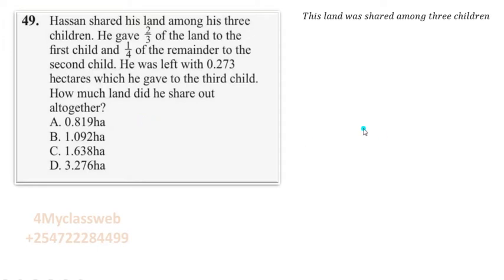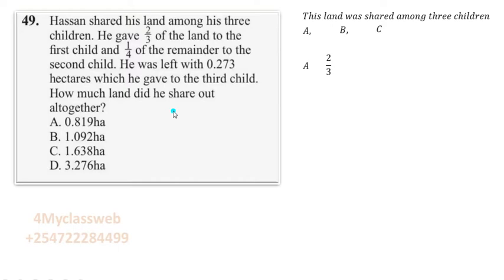To approach this question: this person shared his land among his three children. Let us call these children A, B, and C. Going back to the statement — he gave two-thirds of the land to the first child, so child A was given two-thirds of the land.